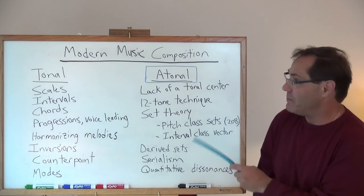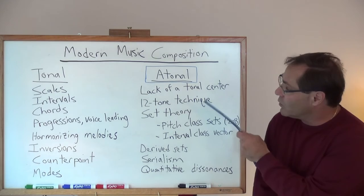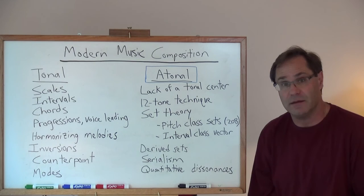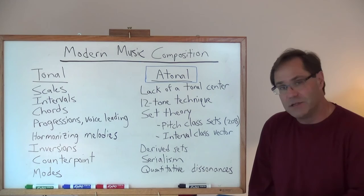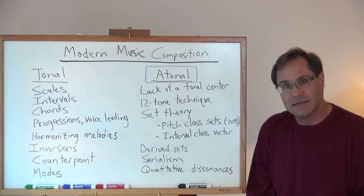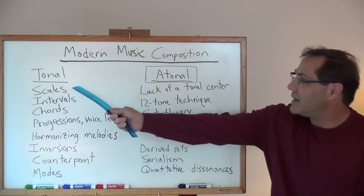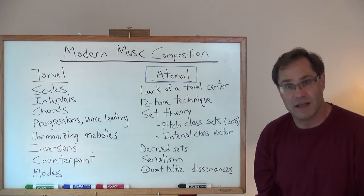So, lack of a tonal center. We're going to be learning what's called the 12-tone technique, which Arnold Schoenberg came up with in the 1920s. We'll learn about set theory, operations that you'll be doing in set theory. We'll learn about what a pitch class set is. There's actually 208 pitch class sets. The diatonic scale, back talking about tonality, the diatonic scale is one of those pitch class sets. So it encompasses all music.